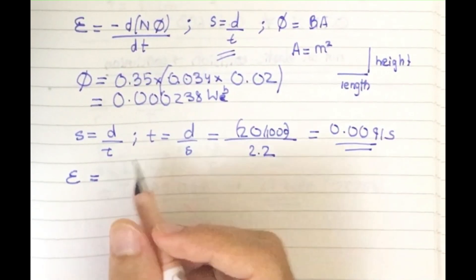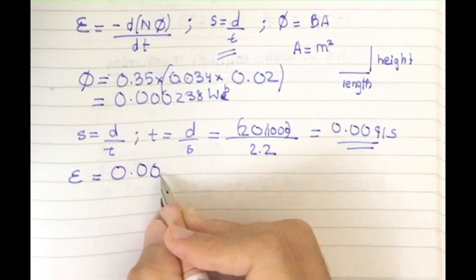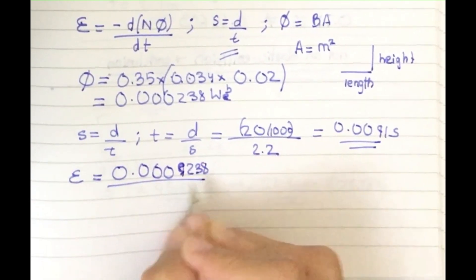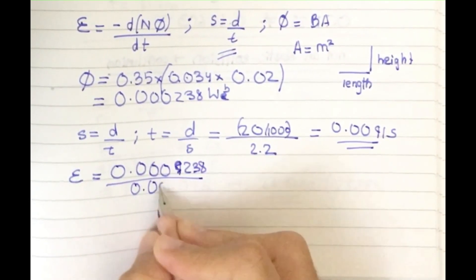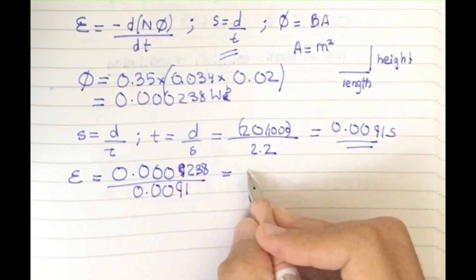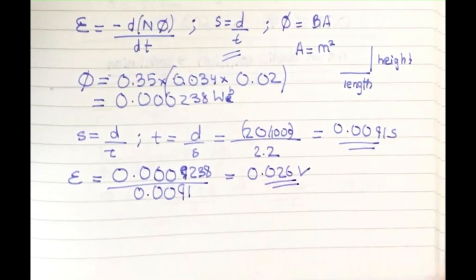I would recommend not to write it. So 0.000238 divided by 0.0091, and then I get this answer as 0.026 volts, which is my final answer.